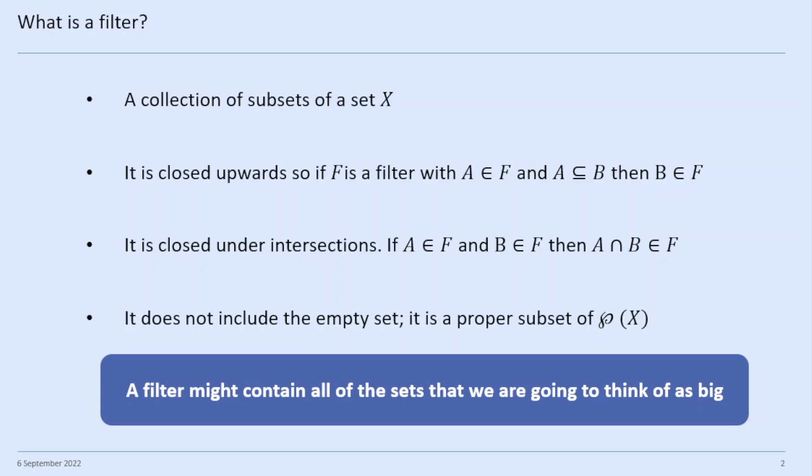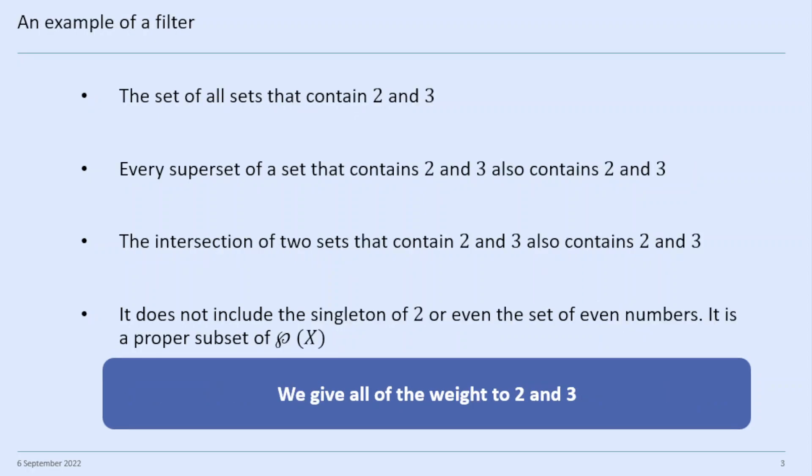We might think of a filter as containing all of those sets that we're going to think of as being big — that's the general idea. So let's look at an example: the set of all sets that contain the numbers two and three. This is a filter, because every superset of a set that contains two and three also contains two and three.